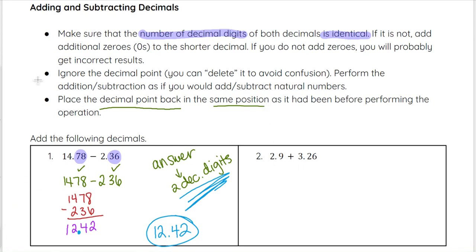Now sometimes we have two decimals that don't actually have the same number of decimal digits. For example, we have a nine and we have a two six. We can't use those as is using this method. We would need to go ahead and rewrite this 2.9 as 2.90.